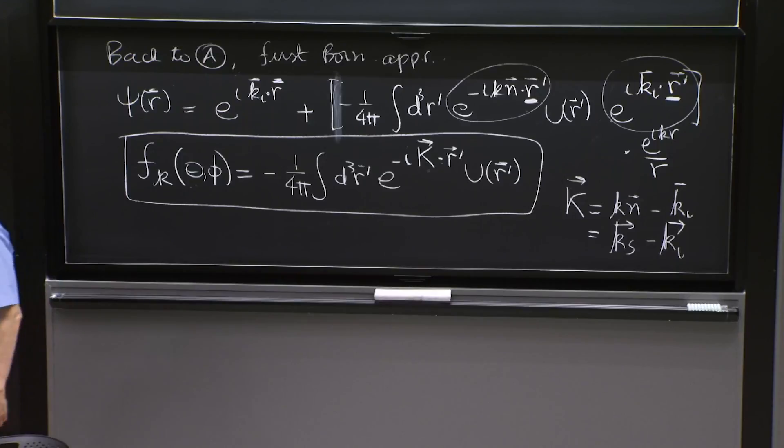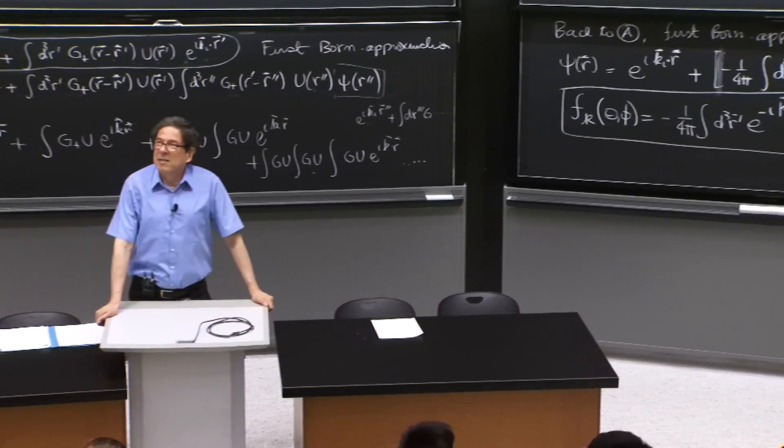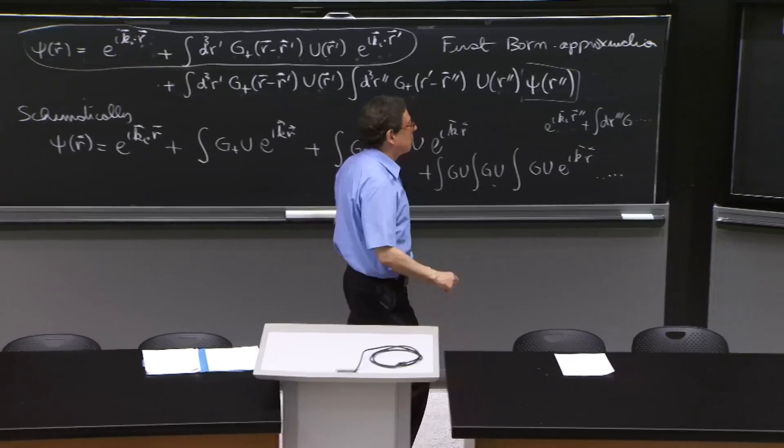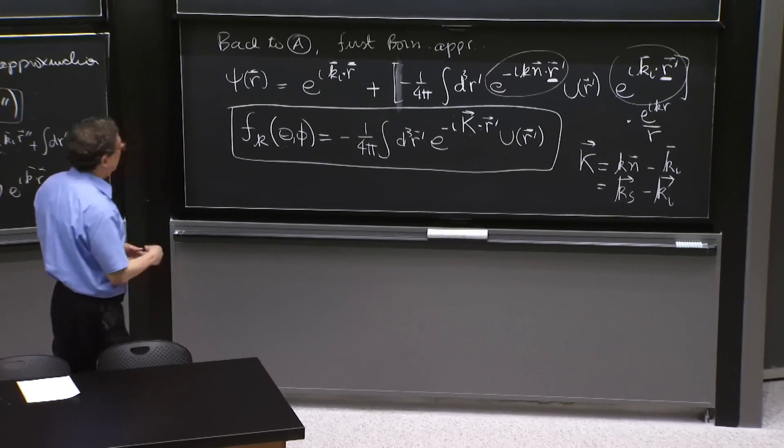So the scattering amplitudes are doing Fourier transforms of the potential. Pretty nice, pretty pictorial way of thinking about it. Fourier transforms are functions. I think when people look at this formula,